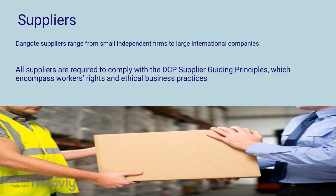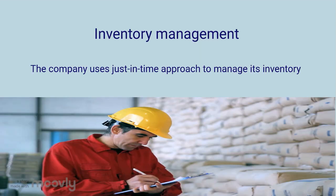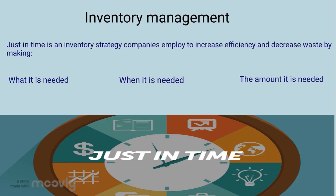For inventory management, the company uses the just-in-time approach. The just-in-time approach is an inventory strategy that companies employ to increase efficiency and decrease waste by receiving goods only as they are needed in the production process. This strategy can reduce inventory costs, especially holding costs, but it requires an accurate forecast of demand before a producer adopts it.